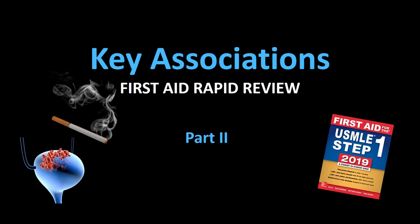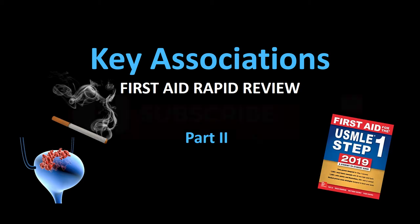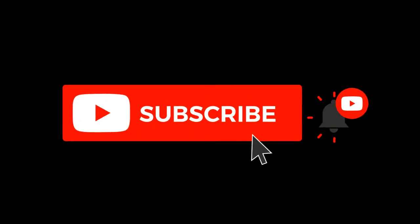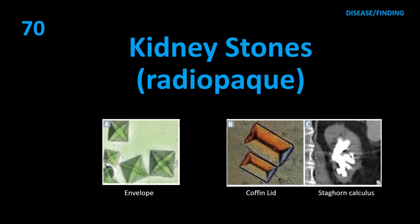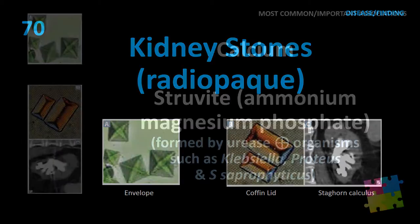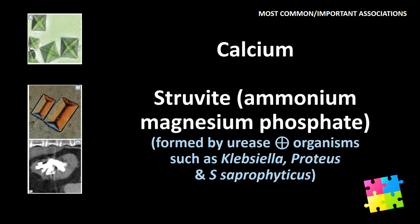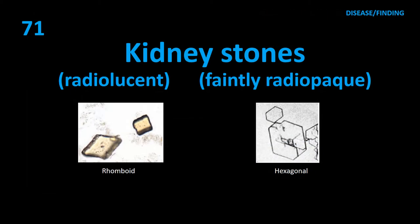Key Associations First Aid Rapid Review. Item 71: Kidney stones — radio-opaque: calcium and struvite (ammonium magnesium phosphate), formed by urease-positive organisms such as Klebsiella, Proteus, and Staph saprophyticus. Radiolucent or faintly radio-opaque: uric acid and cystine.